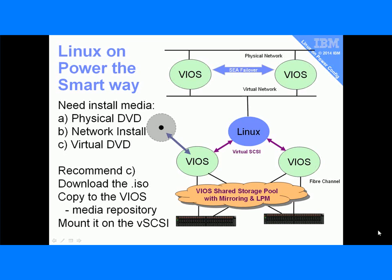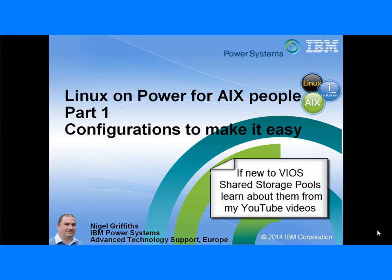There is one thing left to do — we need some sort of installation media. We could use a physical DVD, but that's somewhat old-fashioned and fairly slow. We could do a network install, which tends to be the way to go eventually with automatic installs. The virtual DVD — where we add the ISO image to the virtual I/O server and then mount it as a virtual device over virtual SCSI into your Linux virtual machine — is the one that makes sense to me, and we're probably already doing that with AIX. So we're done for Linux on Power for AIX people — the configuration side of things. In other parts of this series we'll be looking at installing various flavours of Linux and then some killer apps that are very easy to install on Linux but would take quite a lot of time on AIX.